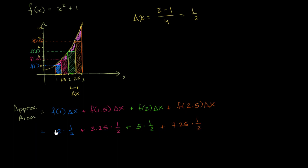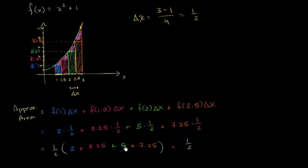We can factor out the one half, so this equals one half times (2 + 3.25 + 5 + 7.25). That's one half times 17.5, which equals 8.75. This is an approximation, and clearly for the function we're using, it's an underestimate because we've given up all of that area. But it is an approximation of the area under the curve.